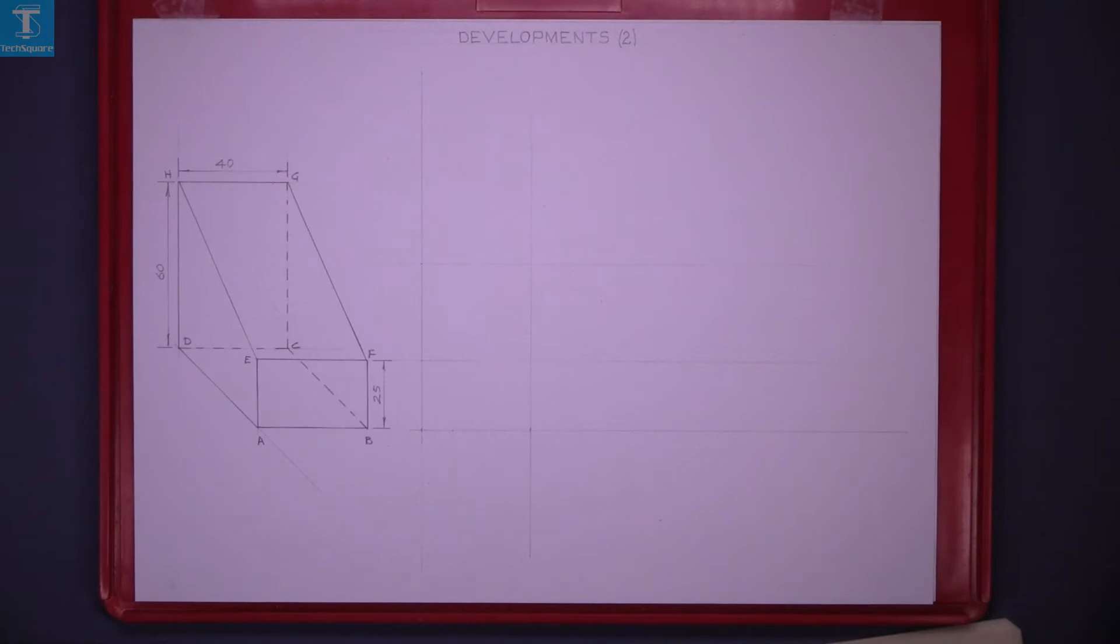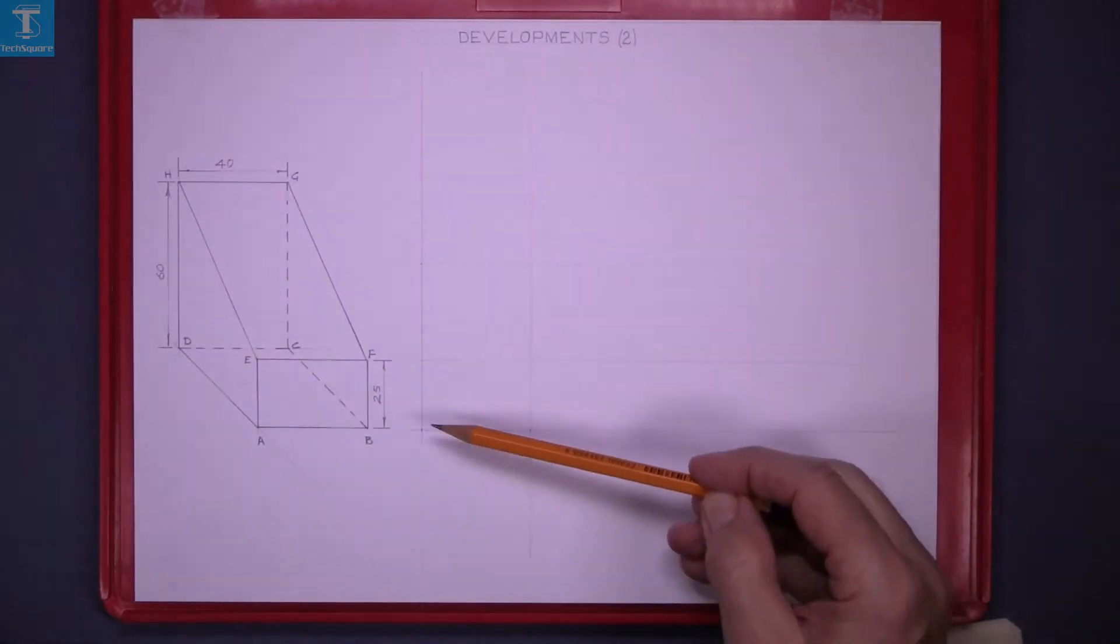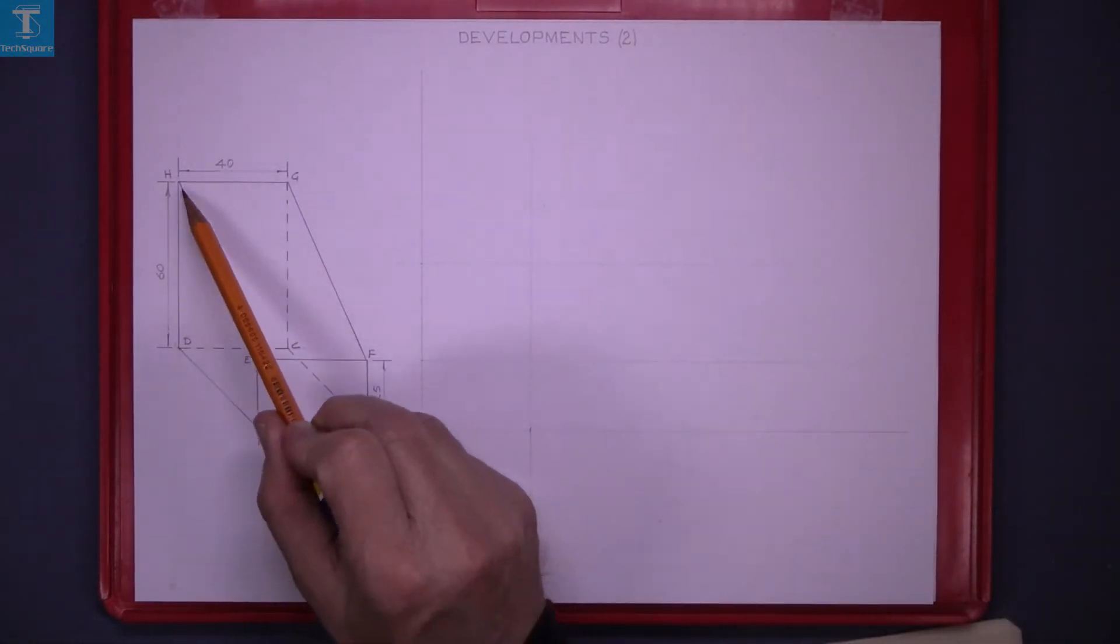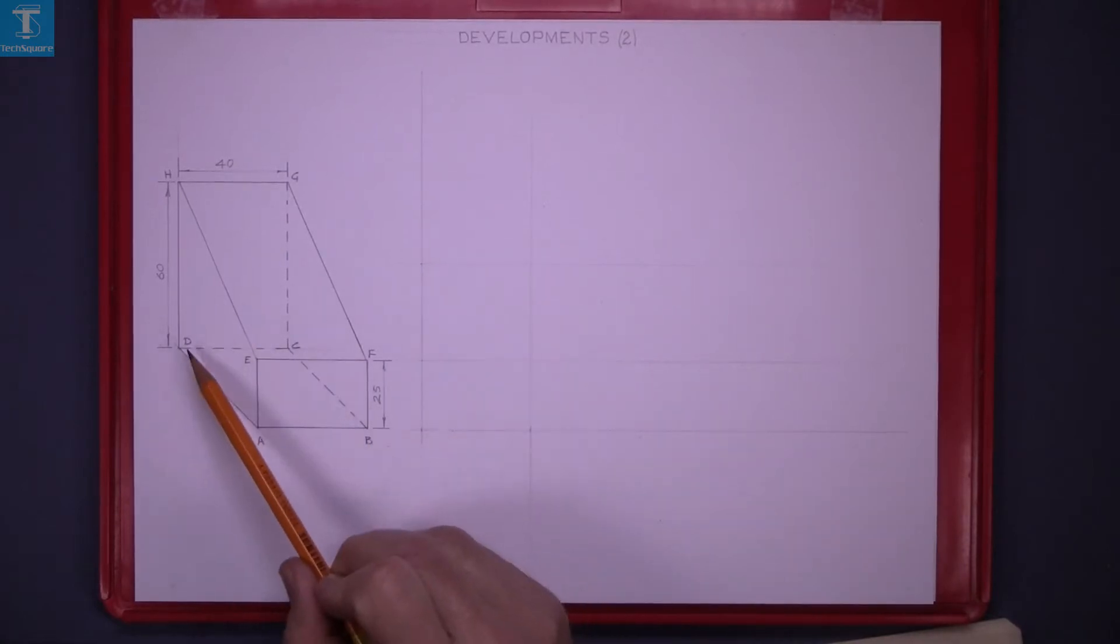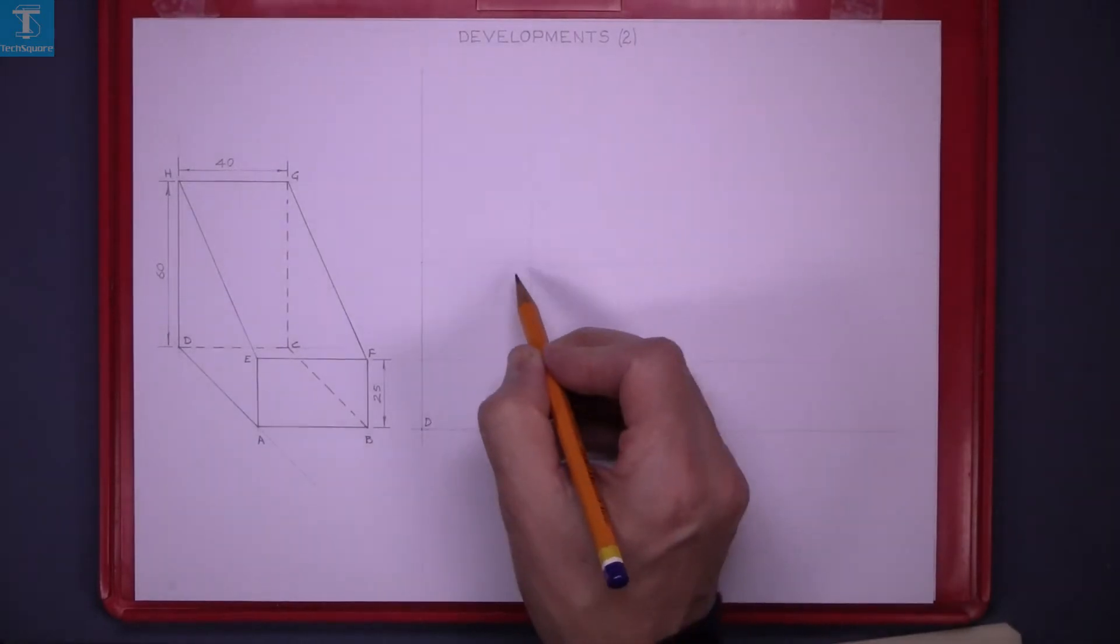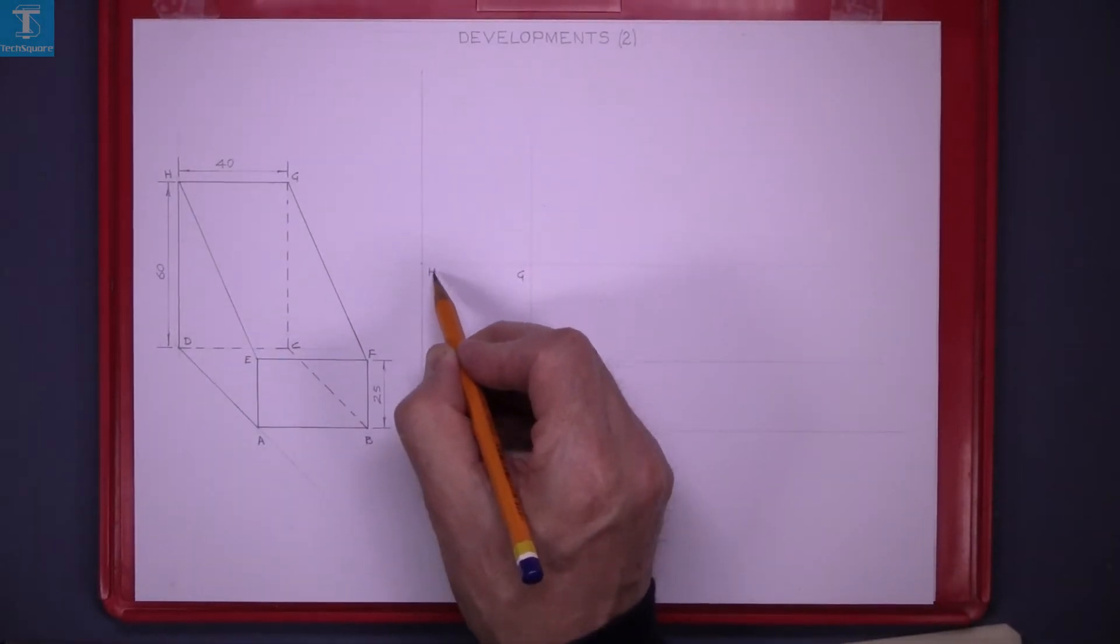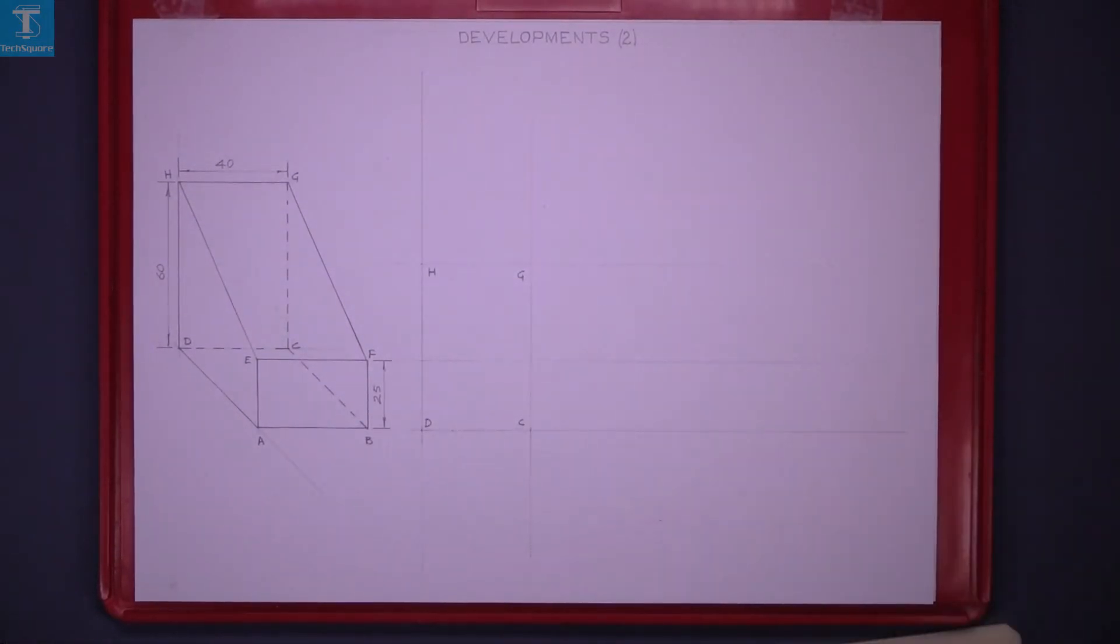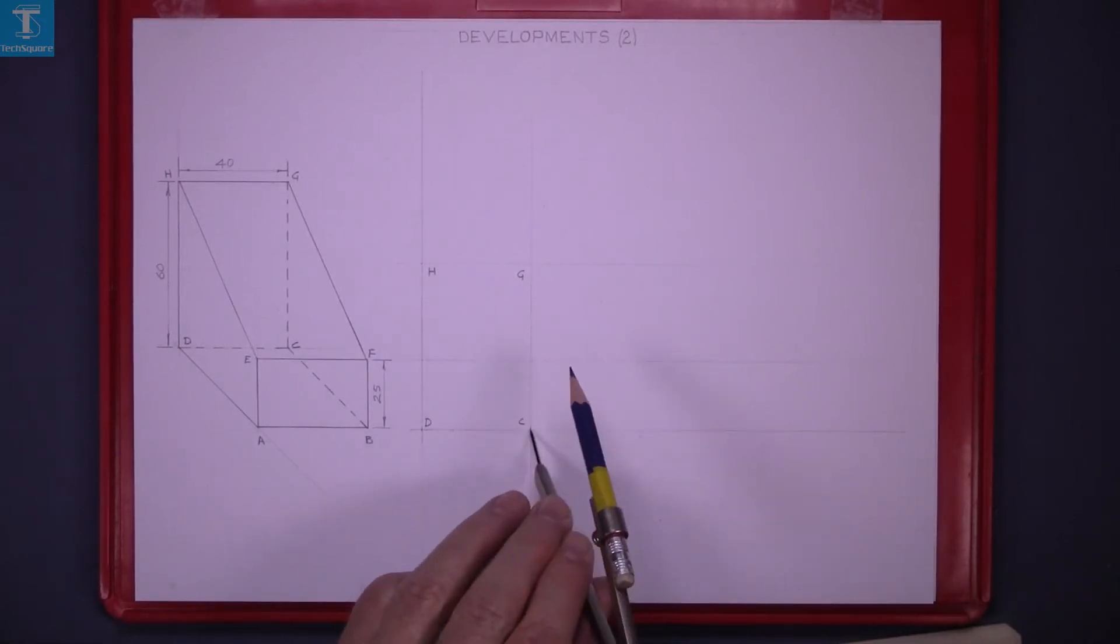I have marked out the height of 60 and the width of 40, and that's the back B C G and H. Now set the compass to the length of the line and mark it three times on this line.